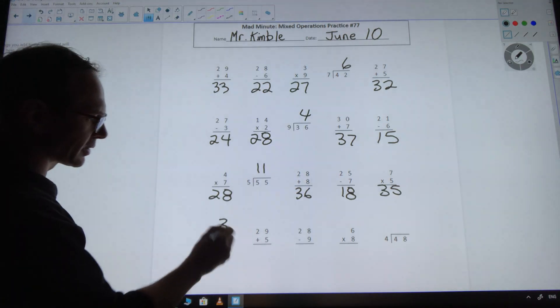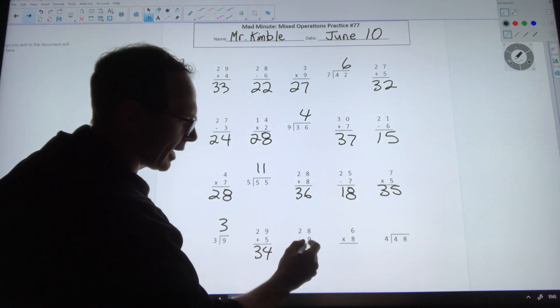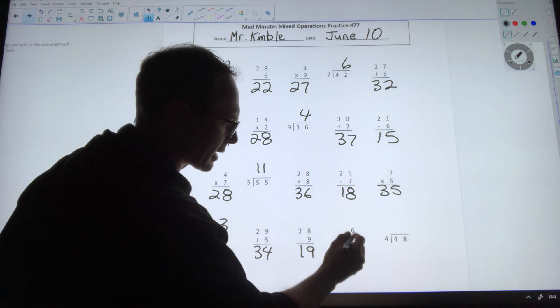29 plus 5 is 34. 28 minus 9 is 19. 6 times 8 is 48.